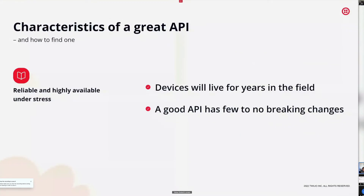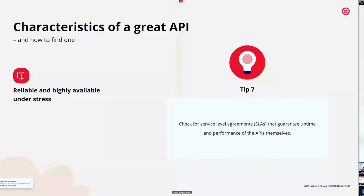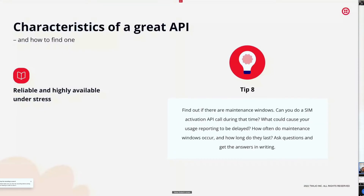APIs need to be reliable and highly available under stress. Ask your vendor: do you offer SLAs that guarantee the uptime and performance of the APIs themselves — not just the SIM uptime, but the API uptime? Once integrated into your workflows, the API is crucial to running your business smoothly. Find out if there are maintenance windows, whether you can make activation API calls during those windows, and how often they occur. Get the answers in writing. You'd be surprised — a vendor might offer APIs, but a maintenance window breaks your API call, leaving you uncertain whether the activation succeeded.